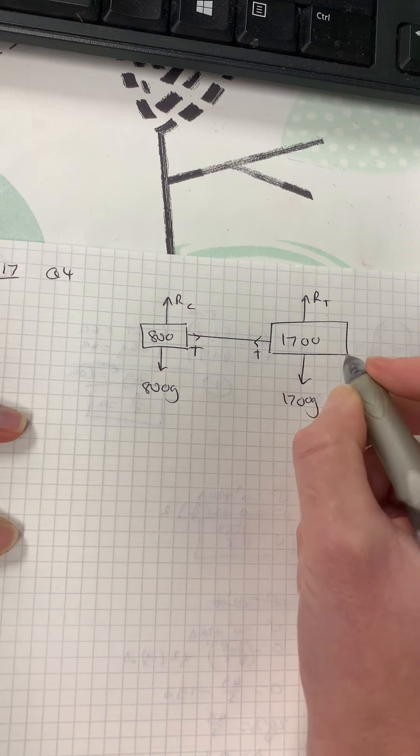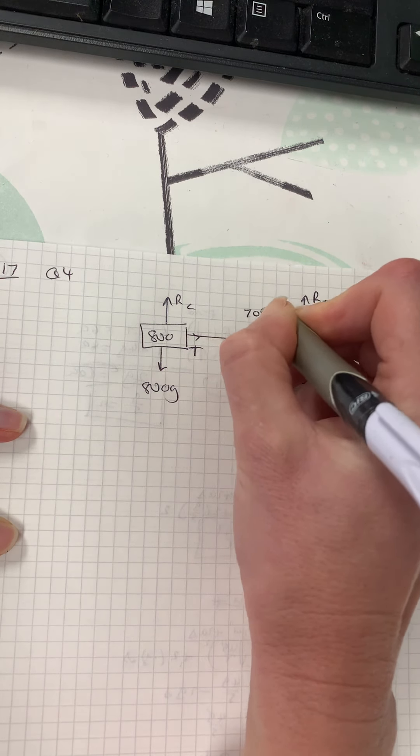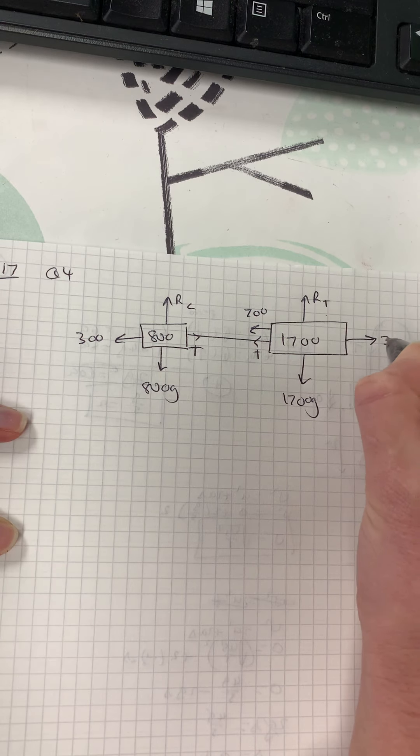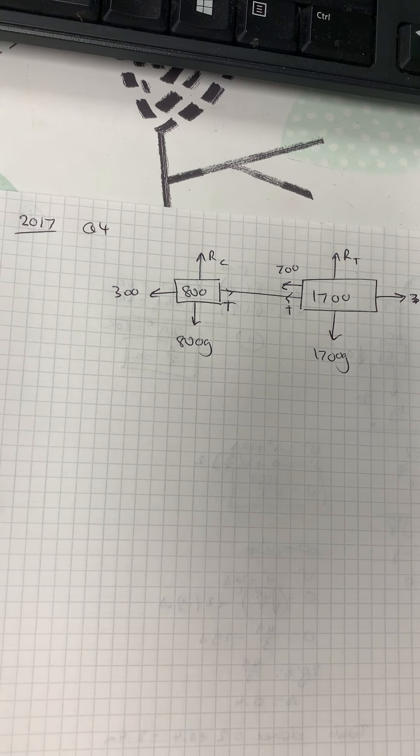The resistance to the motion of the truck is 700, the resistance to the motion of the car is 300. The truck has got a forward force of 2000, and draw a diagram showing all the forces. That's just what I've done there now in that one.